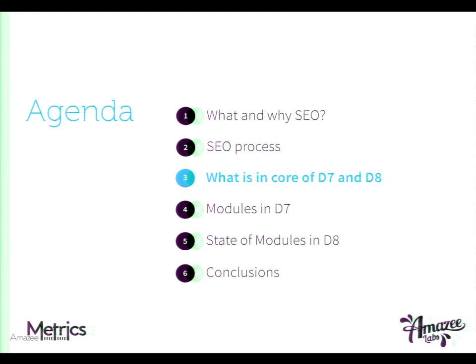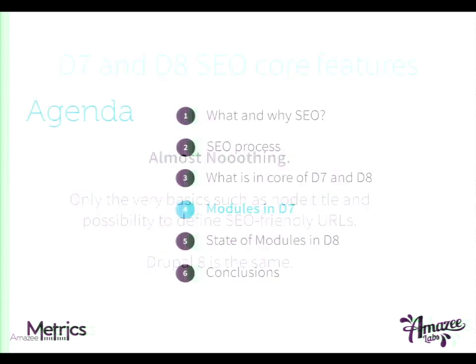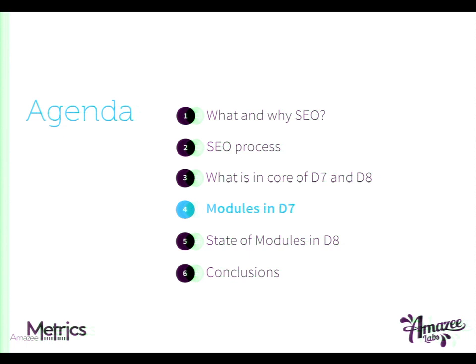Now let's dive into what needs to be done on the technical area. What is there in core? Almost nothing. You have to work a lot with modules. What you have is the very basics: a node title, an H1, and the possibility to define SEO-friendly URLs. But it's not enough. And for Drupal 8, it's the same. That's why I'm now going to show you the modules we're using.